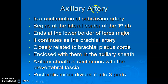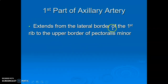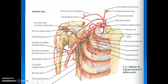Pectoralis minor divides the axillary artery into three parts. The first part extends from the lateral border of the first rib to the upper border of pectoralis minor. The second part is posterior to pectoralis minor. The third part is lateral to pectoralis minor, from the lower border of pec minor to the lower border of teres major, where the axillary artery terminates.